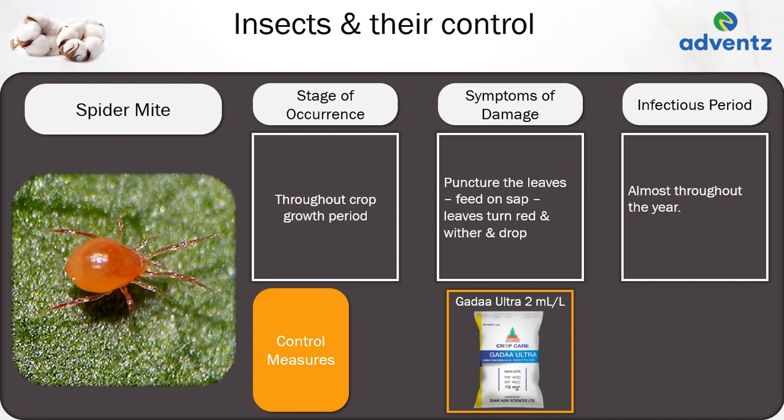The next insect is spider mite. Spider mite is active throughout the year and can cause infection throughout the year. The symptoms of damage are it punctures the leaf, feeds on sap, and leads to leaves turning red, withering and dropping. Control: apply Jai Kisan Gadda Ultra at 2 ml per litre.